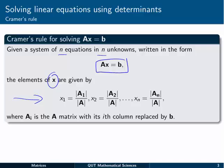Essentially it works like this. The first part of the x vector, x1, is given by the determinant of some matrix called A1, divided by the determinant of the A matrix. But what exactly is this A1 matrix?